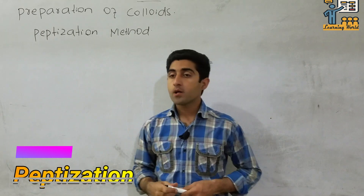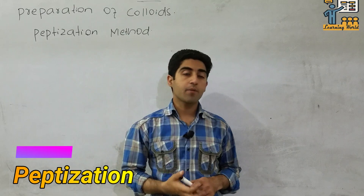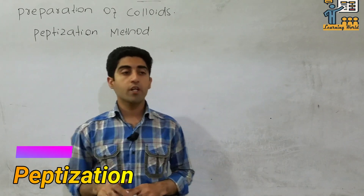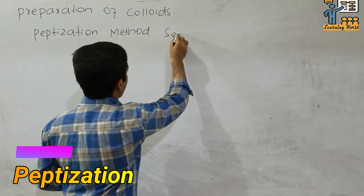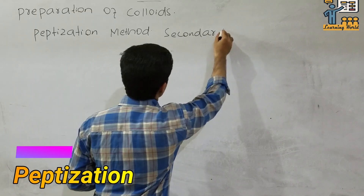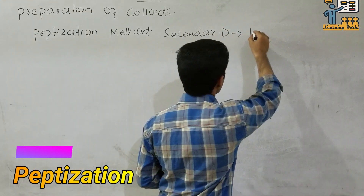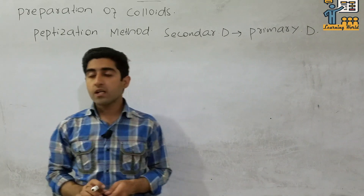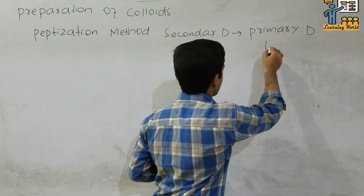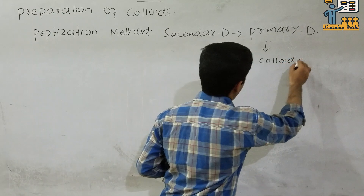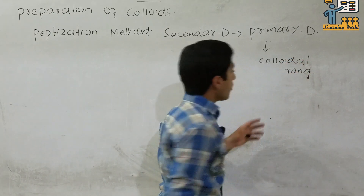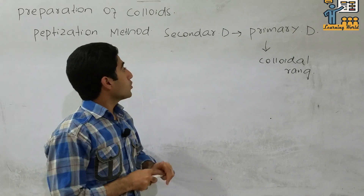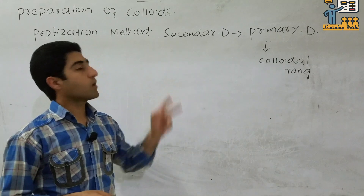In this segment we will talk about the preparation of lyophobic colloids with the help of the peptization method. Peptization is a method in which secondary dispersion is converted into primary dispersion. Primary dispersion simply means particles of colloidal range.